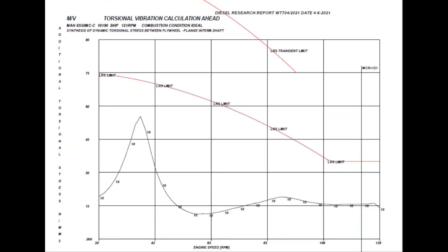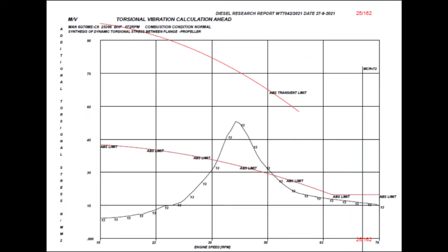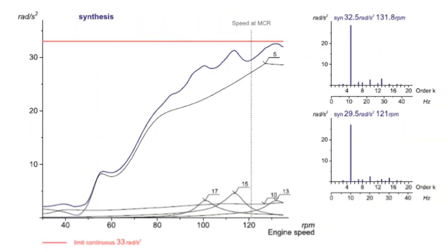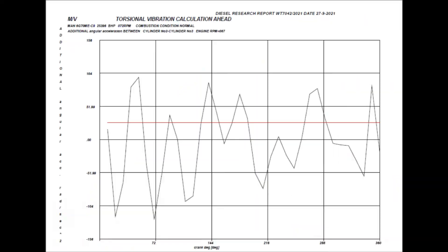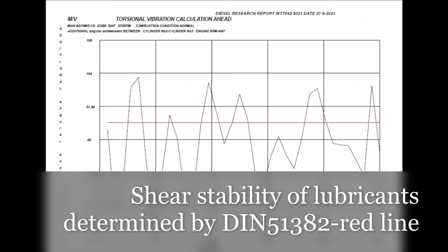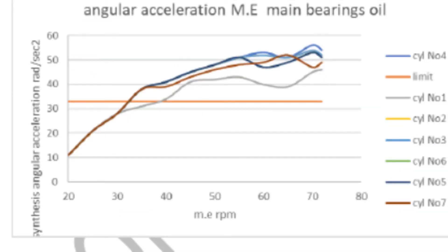Initial critical points shift to higher RPM for lower propeller inertia, becoming new critical points. The other effect is an increase in angular acceleration beyond the limit of 33 rad/s², leading to lubricant film breakdown and bearing failure. Shear stability of lubricants is determined by DIN 51382, shown by the red line.